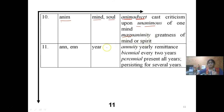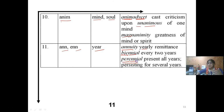ANN or N means 'year.' ANNUITY means yearly. BIENNIAL — BI means two, ANN means year — for two years. PERENNIAL — PERI means many, ANN means year — present for many years. So annuity is one year, biennial is two years, and perennial means many years.